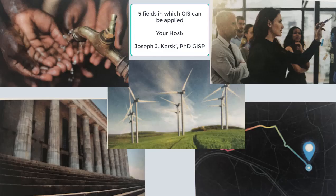So those are five areas that GIS is being applied: public health, business, environmental management, policy and law, and urban planning. Thanks, and go out there and make a difference in your world.